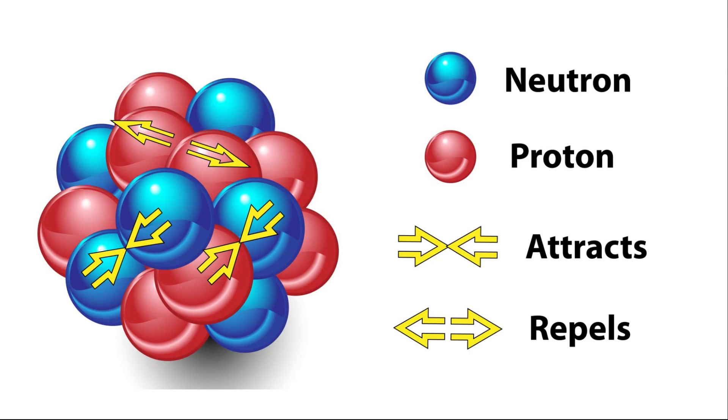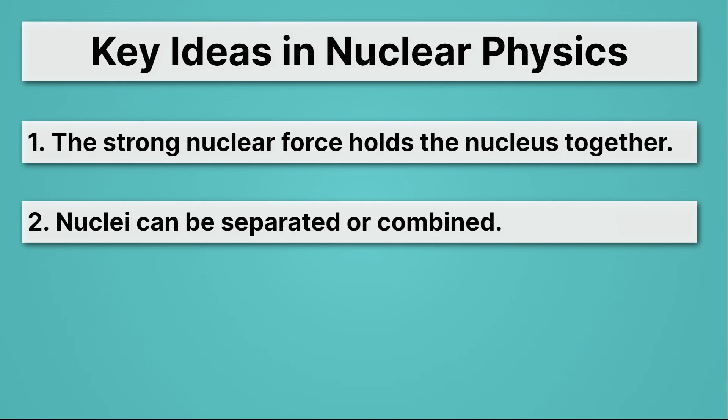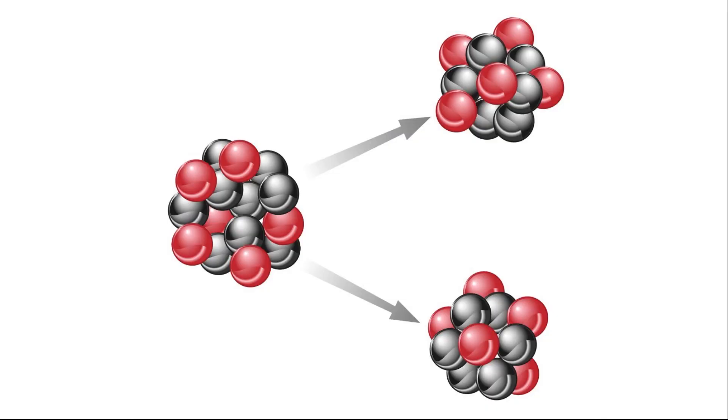But sometimes nuclei are unstable, and unstable nuclei fall apart. They're unstable precisely because of that proton-proton repulsion we've talked about. That leads to our next key idea in nuclear physics. Nuclei can be separated or combined. Here's a separation process. On the left we have one nucleus and on the right afterwards we have two nuclei. The atom has fallen apart.